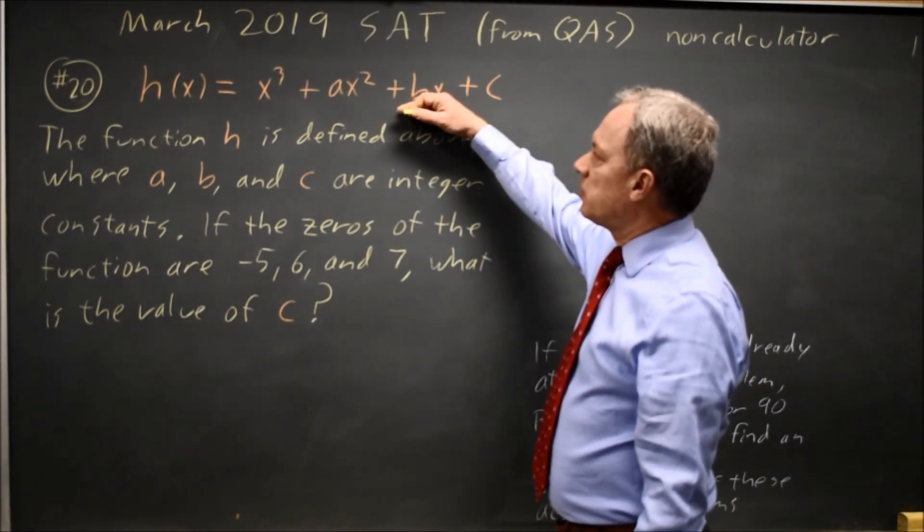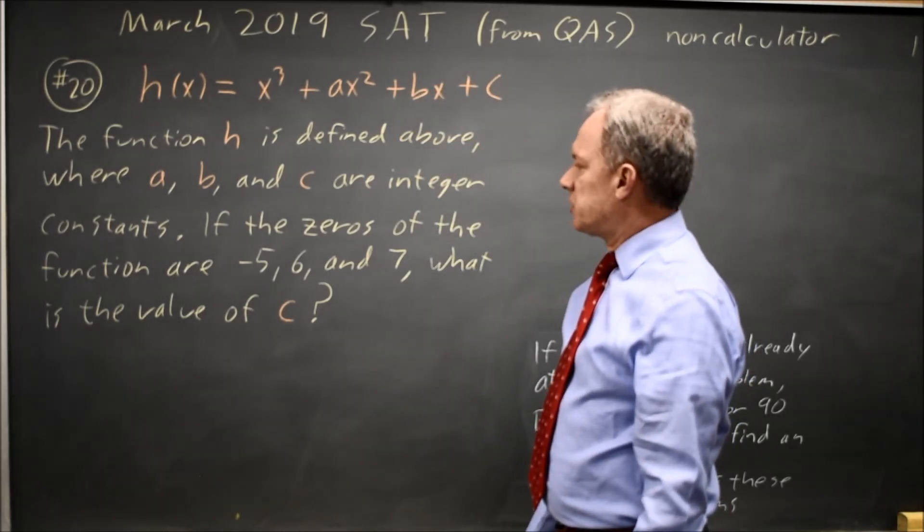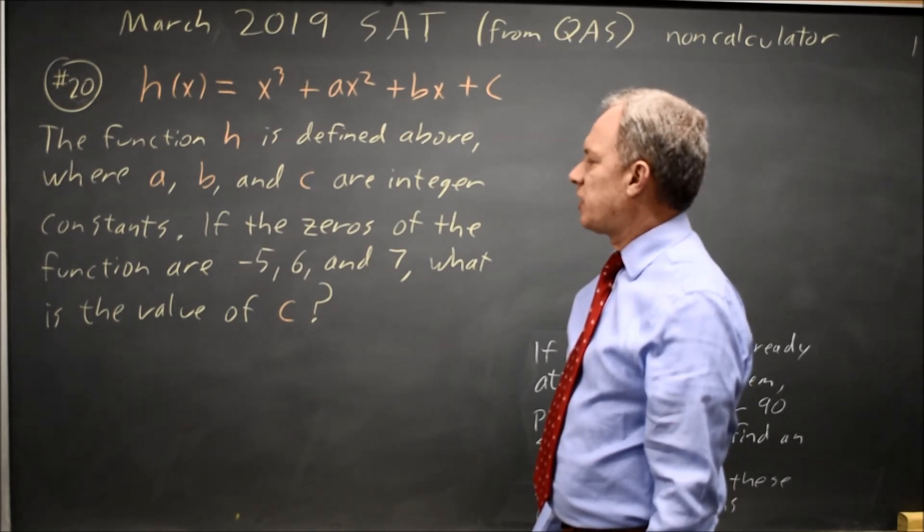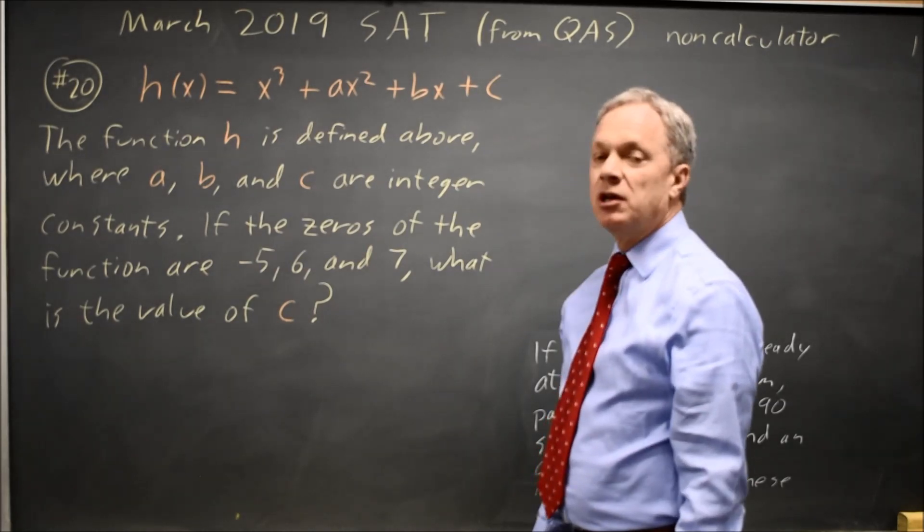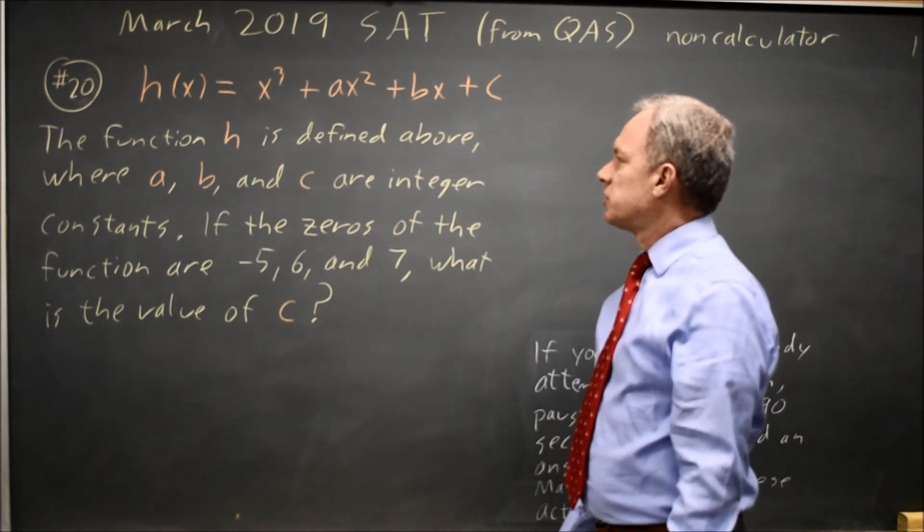College Board gives us a cubic polynomial and says A, B, and C are integer constants. If the zeros of the function are negative 5, positive 6, and positive 7, what is the value of C, the constant, in this function?